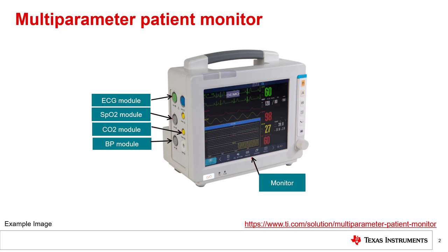By definition, a multi-parameter patient monitor measures multiple parameters like electrocardiogram or ECG, blood oxygen concentration or SpO2, temperature, blood pressure, carbon dioxide or CO2, and multiple other gases. These parameters are typically measured by using isolated modules which can be connected to the main unit, called monitor.